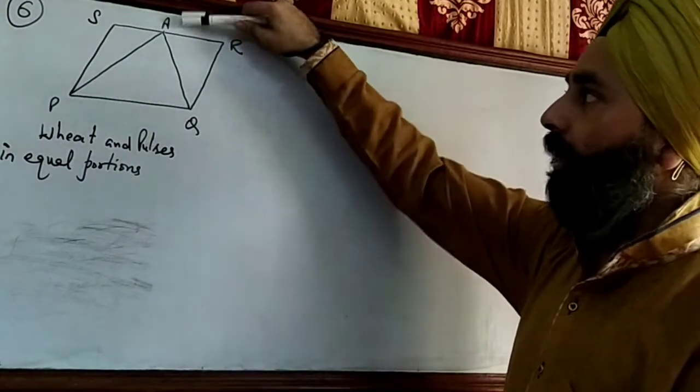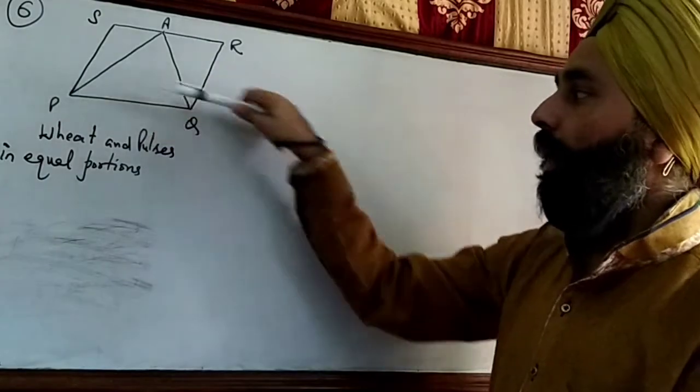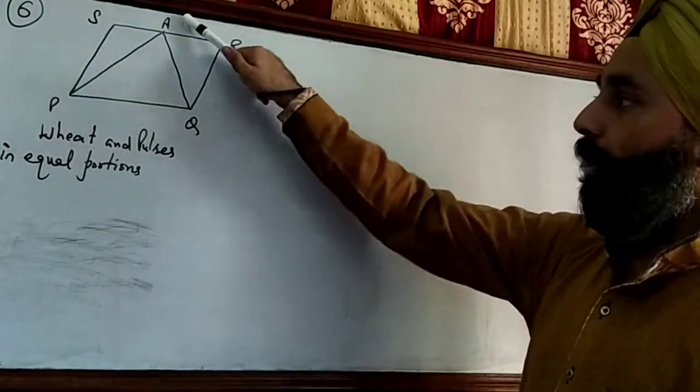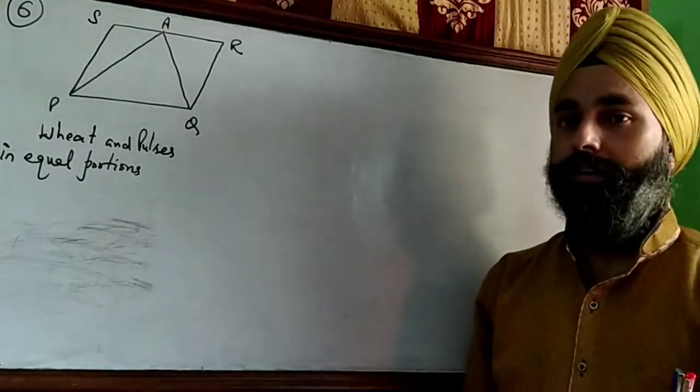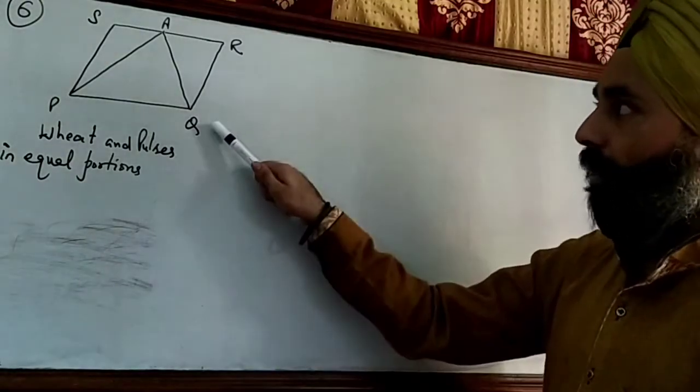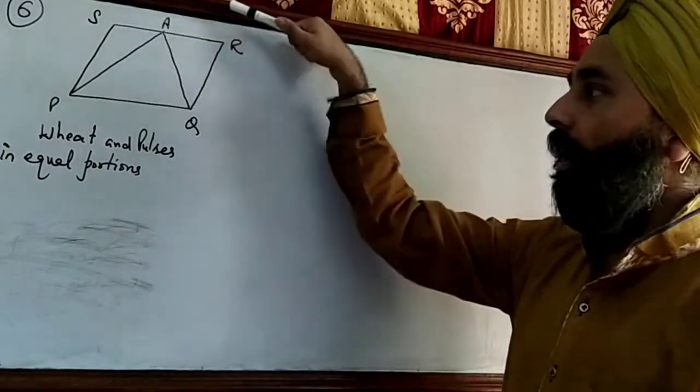She took a point A on SR and joined it to points P and Q. A point ko P se join kiya, a point ko Q se join kiya. This is what's given in the question.